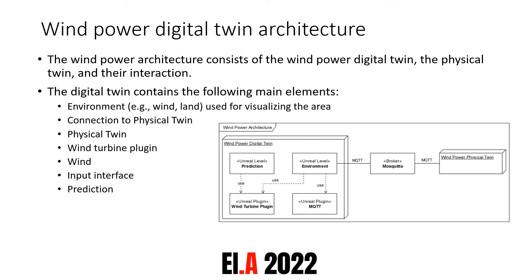The resulting architecture consists of three main components: the physical twin, the MQTT broker, and the digital twin. Throughout the study, the physical twin was mocked by another software application, allowing for increased testability and flexibility. The MQTT broker ensures low coupling between the digital twin and the physical twin, allowing both parts to be changed independently. So the digital twin can exist while the physical twin is swapped — either the actual physical environment or a mocked physical twin, as we do in this study.